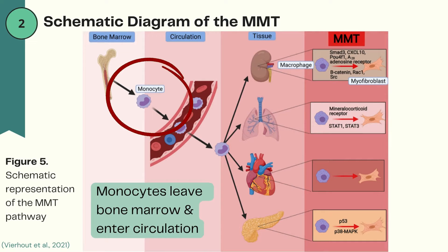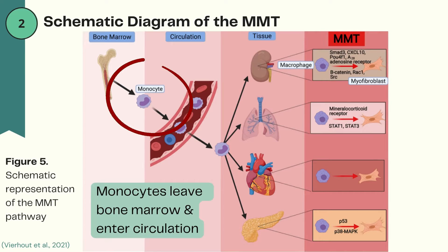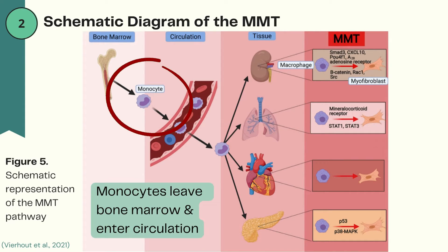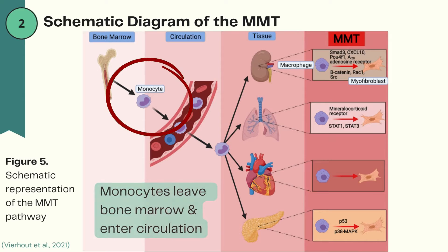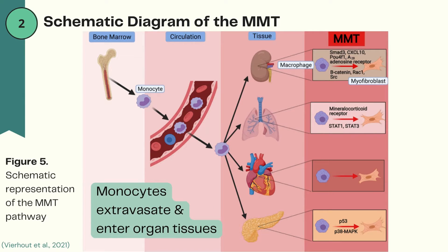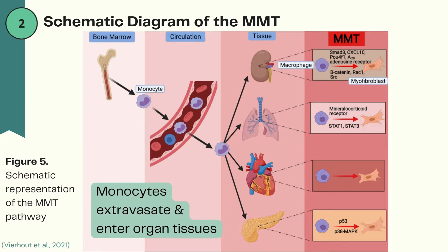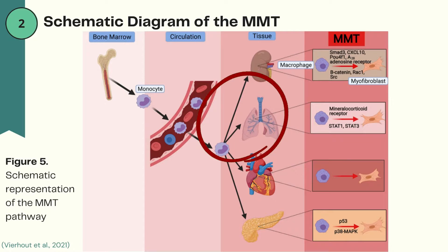Figure 5 from the research paper summarizes MMT. As you can see, we have monocytes, which develop in our bone marrow, leave the bone marrow, and enter the blood circulation. From here, these monocytes will extravasate, which basically just means flow out from a circulation or vessel, and enter various bodily tissues of many different organs.